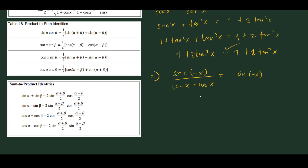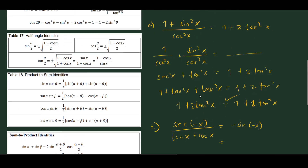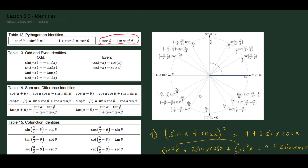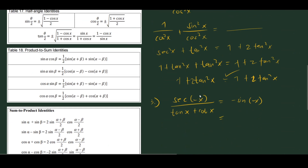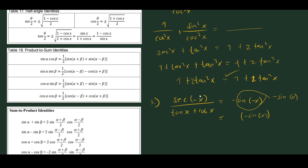Let's first simplify the right-hand side. Using the odd and even identities, sin(-x) = -sin x, so -sin(-x) = -(-sin x), which is just sin x. So our target simplifies to sin x.